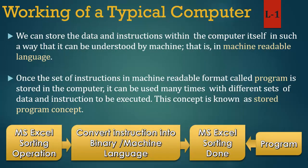In 8th standard we learned MS Excel sorting. Sorting means to arrange data in ascending or descending order. When we sort data in MS Excel in human language, the computer first converts it to binary or machine language to understand itself. Afterwards, when the computer understands the instruction, it sorts the data and gives the result in human language through the program or software.